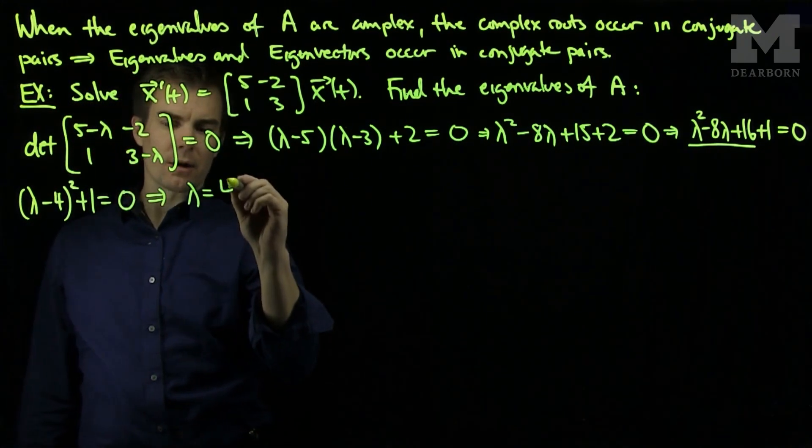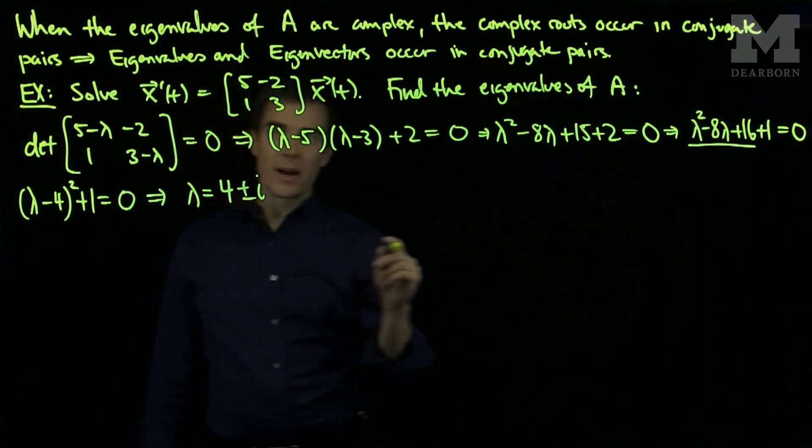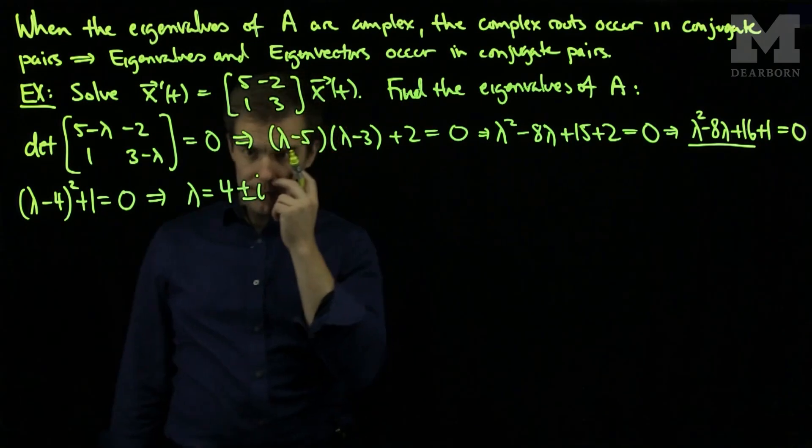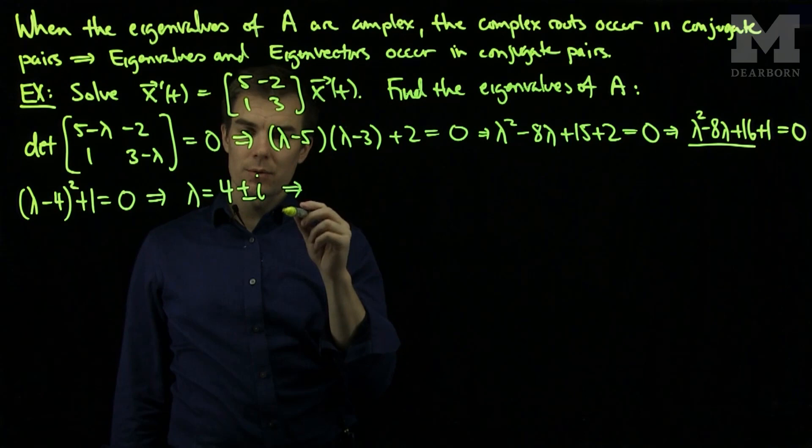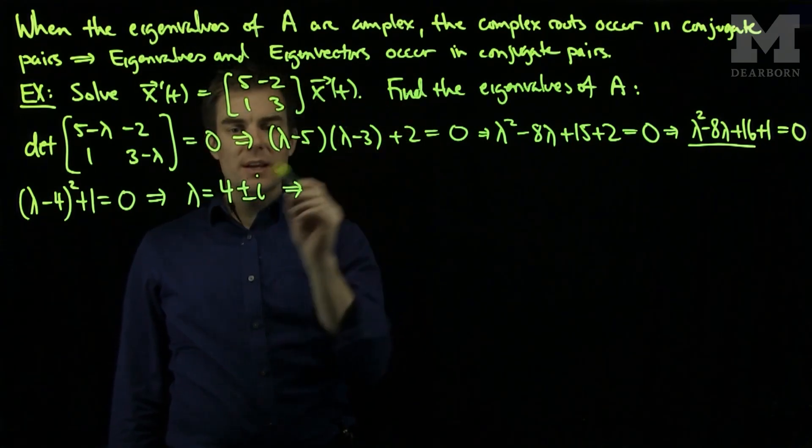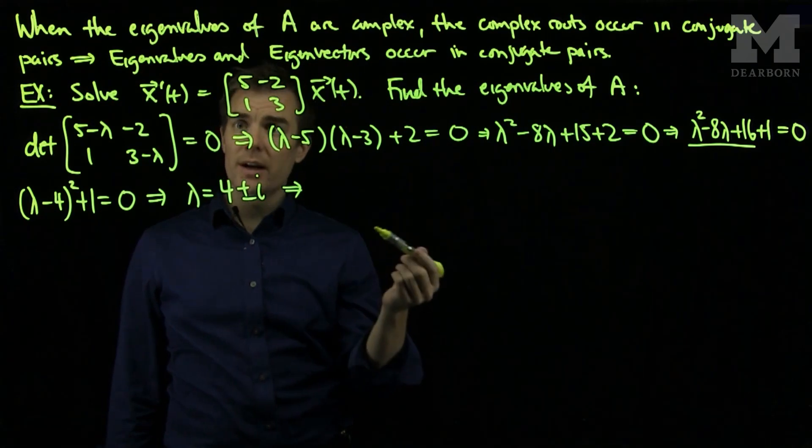So this will be (λ-4)² + 1 = 0, which tells me that my eigenvalues are 4 ± i. Notice we can see explicitly that I have 4+i and 4-i, so they do indeed occur in conjugate pairs.